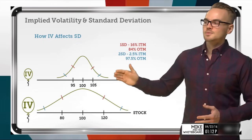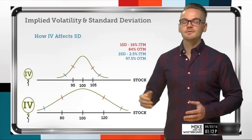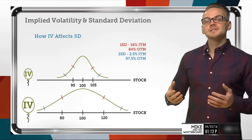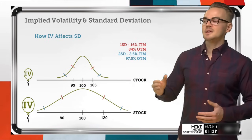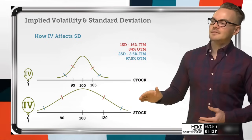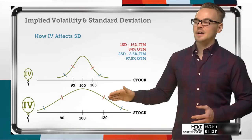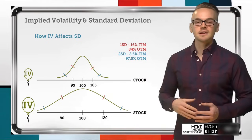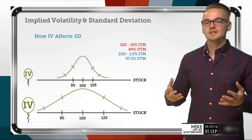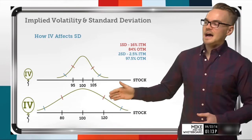Of course we're always going to have those tail risk events, but in a low volatility environment we don't perceive them to be very large. But when we have a high volatility environment, you can see how drastically this changes our one standard deviation and two standard deviation lines.